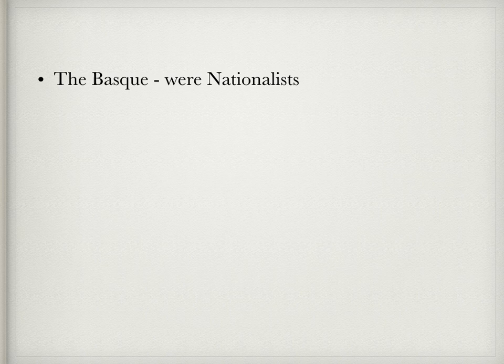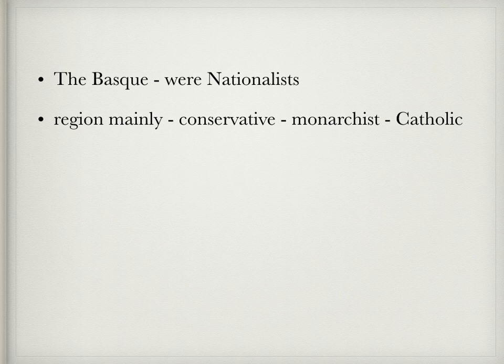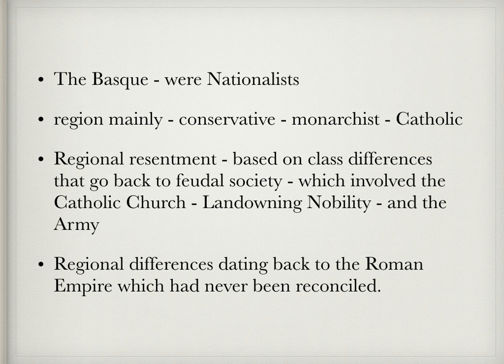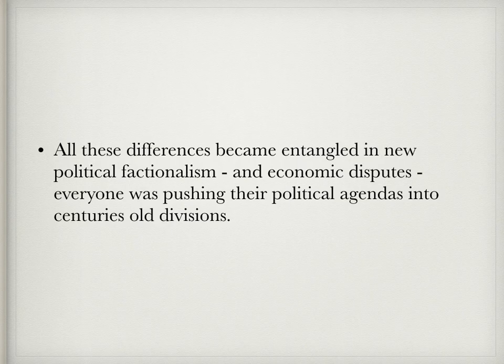The Basque, on the other hand, were nationalists. The region was mainly conservative, monarchist, and Catholic — made up mainly of peasants, more countryside versus town. Limited opportunity drew resentment towards Madrid and especially Catalonia. Some of these divisions were based on class differences going back to feudal society involving the Catholic Church, land-owning nobility, and the army. Regional differences dating back to the Roman Empire had never been reconciled, and all these differences became entangled in new political factionalism and economic disputes as everyone pushed their political agenda into centuries-old divisions.